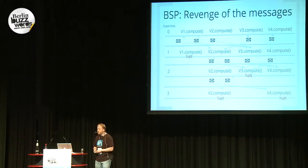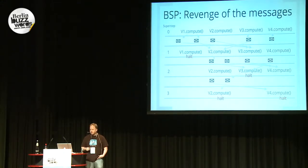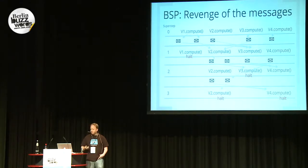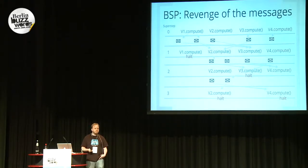Once we get to super step 1, the first vertex votes to halt, so it's effectively out of the game. That leaves vertex 2, vertex 3, and vertex 4 to send more messages. Messages sent in super step 1 get delivered in super step 2, at which point vertex 3 votes to halt as well, leaving just vertex 2 and vertex 4. In super step 2, vertex 4 doesn't actually send any messages but it doesn't vote to halt either — it just does its thing.